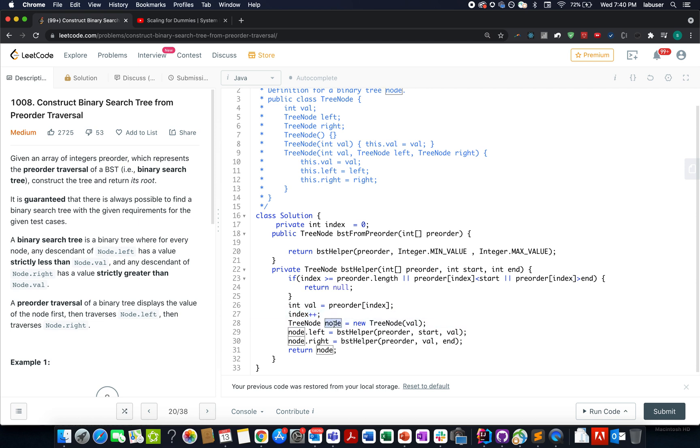Otherwise I extract the value at a particular index, increment the pointer for the next iteration, and create a new node using the value. Node.left equals BST helper. We pass in the preorder traversal, the lower bound remains the same, the current value becomes the upper bound for the left traversal. For the right traversal, the current value becomes the lower bound, the upper bound remains the same. In the end we simply return the node we've created, and in this way we form the entire tree.